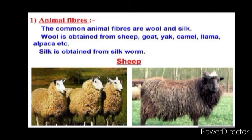These wool yielding animals bear hair on their body. Do you know why these animals have a thick coat of hair? Because this hair traps a lot of air. Air is a poor conductor of heat, so air keeps these animals warm. Wool is derived from these hairy fibers.